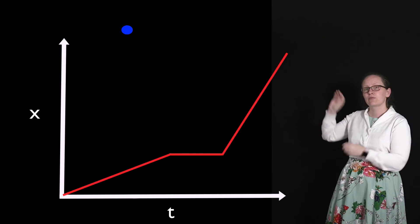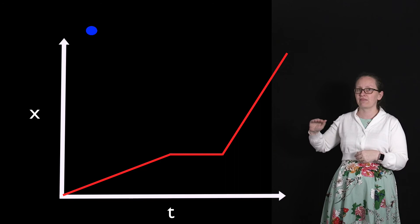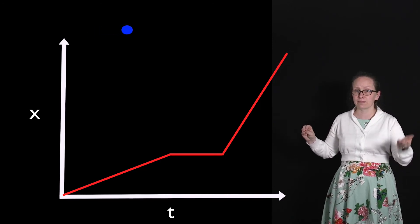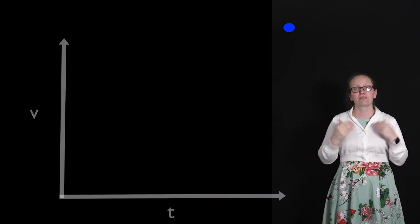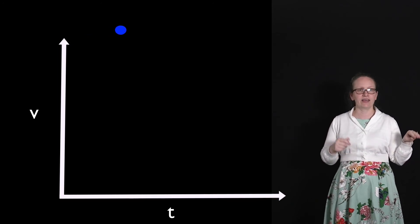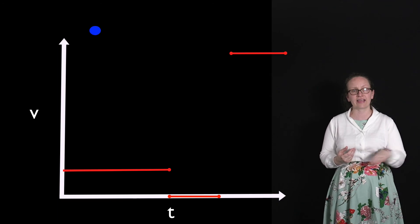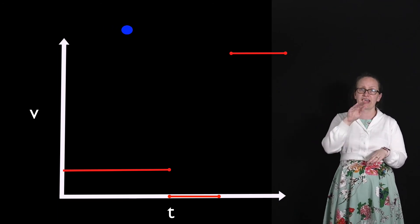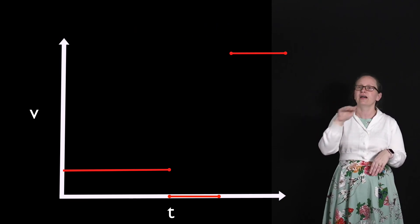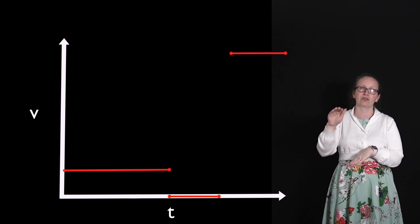Let's consider a slightly more complex example where a ball moves slowly with constant velocity, stops for a little bit, and then moves with a constant but much faster velocity. The displacement versus time graph shows a shallow constant gradient, then a horizontal line when the ball stops, then a steep but constant line when it moves faster. The velocity versus time graph is initially a horizontal line at a small value, then drops to zero along the x-axis, and then becomes a higher horizontal line — parallel to the x-axis but further up — to show the faster speed.